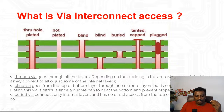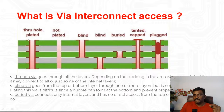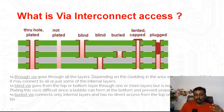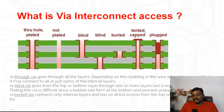A via is a hole that connects the top layer and the bottom layer. You have through plated vias and non-plated vias. Plated vias have copper and provide connectivity from the top layer to the bottom layer. Blind vias connect the top layer to an internal layer, not to the bottom layer. Buried vias connect only internal layers, not the top or bottom layers. Tented and plugged vias are rarely used types. The most widely used are through-hole plated, non-plated, blind, and buried vias.